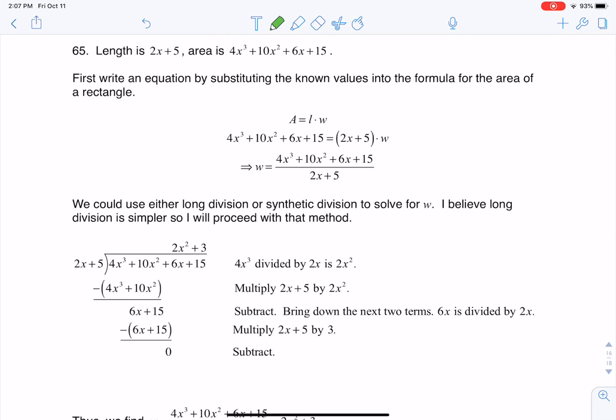We know that the area formula is length times width, so I substituted in the area formula on the left side of the equation, the length formula on the right side. If I want to solve for w, I want to divide this binomial over so I can get w isolated. So there's my expression for w.